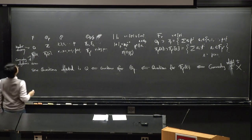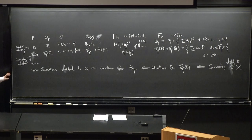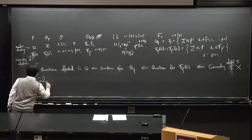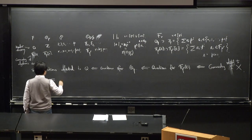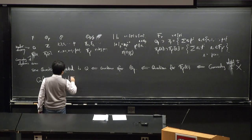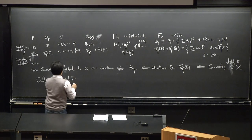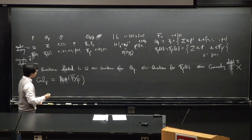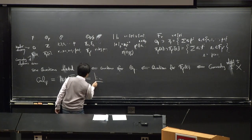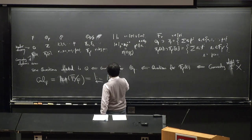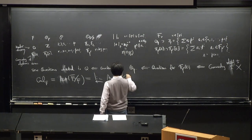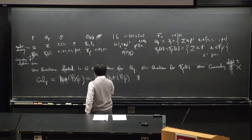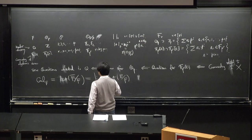One of the most important questions for both is to understand the Galois group, which is roughly speaking the automorphism group of the algebraic closure of F — or the separable closure of F. As a group, it's in fact a profinite group: the inverse limit of finite groups, namely automorphisms of E over F, where E over F ranges over finite separable extensions.